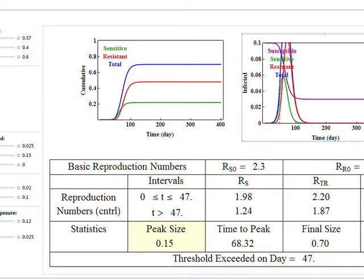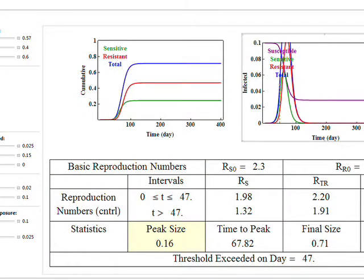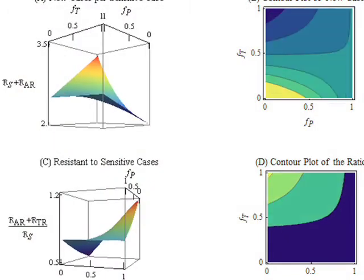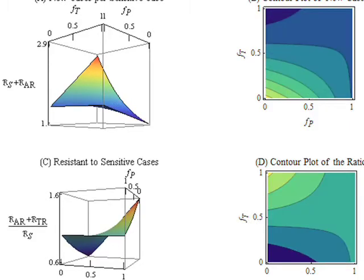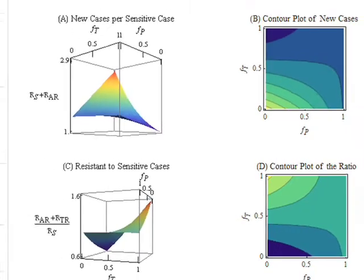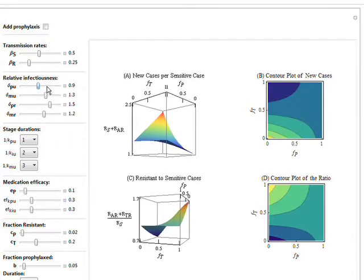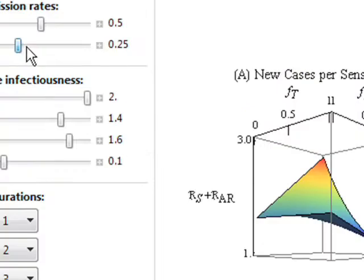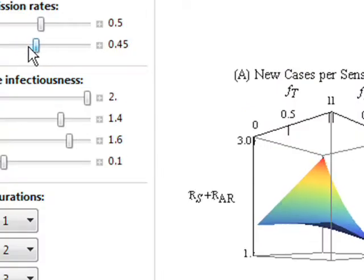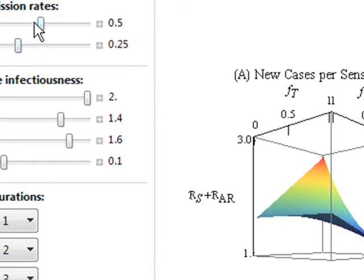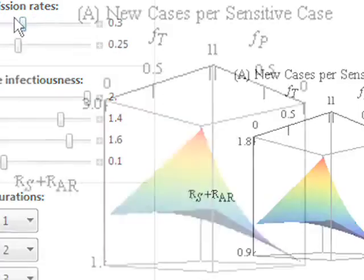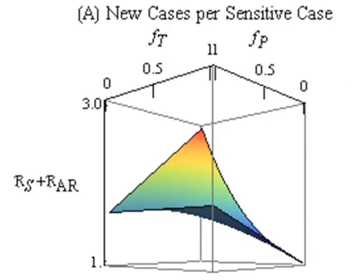There are several features that Mathematica has that were very beneficial to our study. The first one is this interactive feature via manipulate commands. This allows us to present the results to non-mathematicians, to policymakers, to visualize the results and see how the outcomes will change with certain actions in terms of disease control strategies.